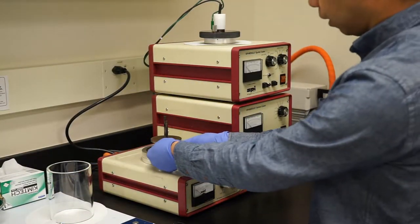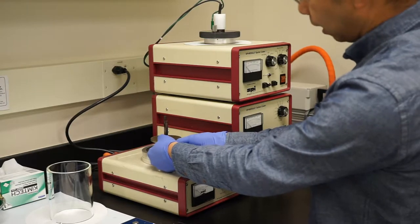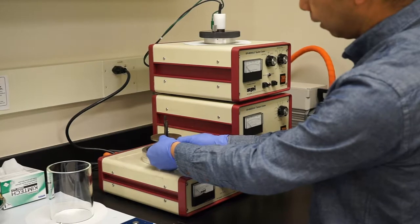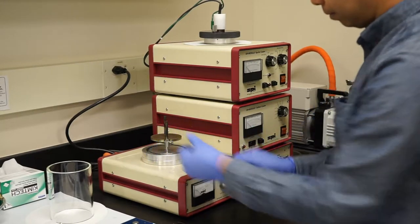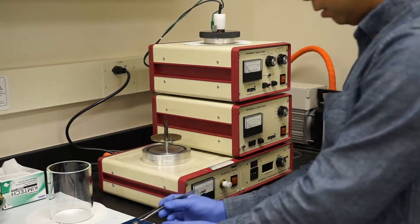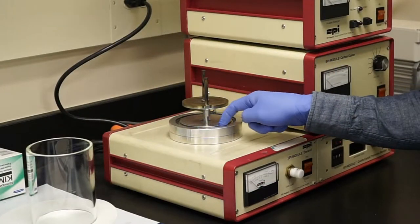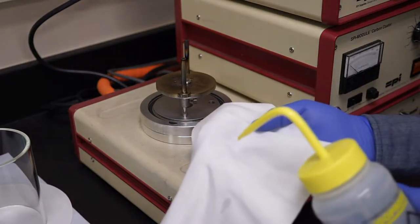Adjust the height of the stage if necessary and place your sample stub into a slot. Check the o-ring to make sure it's clean. If it's dirty, wipe it with a clean cloth and isopropanol.